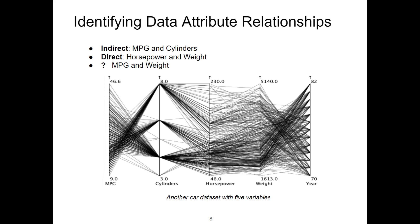Let's look at edges between the horsepower and weight axes. In general, while horsepower increases, weight also increases, resulting in many nearly horizontal edges. This is called a direct relationship. If the edges between axes don't provide any pattern, we can say that there is no relationship. In this example, we cannot identify any relationship between MPG and weight attributes. However, the order of axes can be changed to identify any relationship.